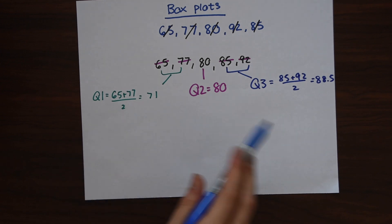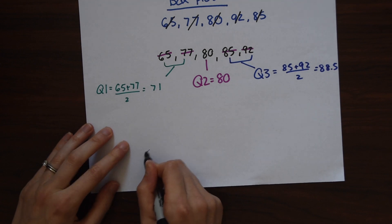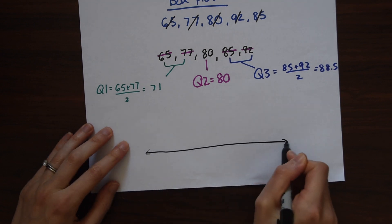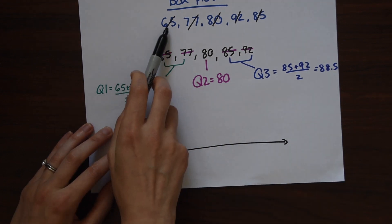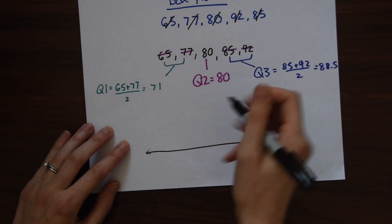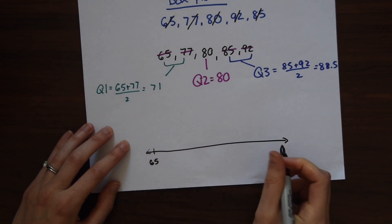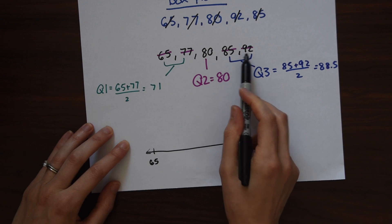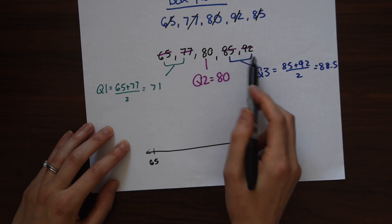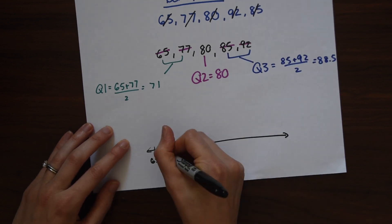So let's start by making a number line. Our minimum, our lowest number is 65. So we're just going to start there. So 65 and then we want to go all the way up to a little past 92. That's our highest number. So let's count by fives.